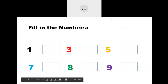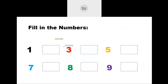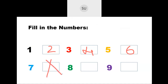Now let's solve a few questions. We need to fill in the missing numbers. We have 1 and 3, so what comes between? It is 2. Then we have 3 and 5, so what comes between? It is 4. Then 5 and 7 — the number between is 6. After 7 comes 8, after 8 comes 9, which is already given, and after 9 comes 10.